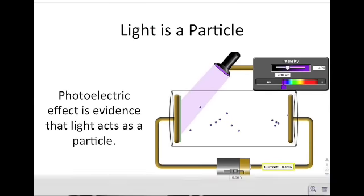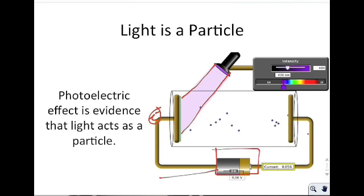Light is also a particle. The evidence for this is the photoelectric effect. A light source is shone on a photoemissive surface — when you shine light on it, electrons can move out. If you shine red light on it, nothing would happen. This is strange, because if light were a wave, you'd expect the waves to add up until electrons were emitted. But that's not what happened.